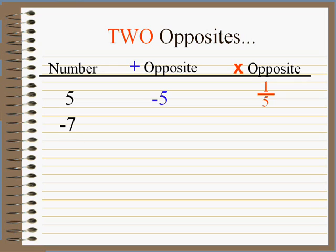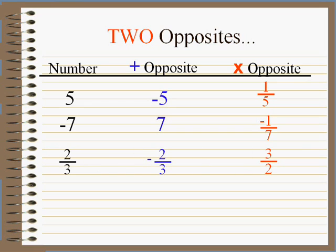Negative seven has an additive opposite, positive seven, but it also has a multiplicative opposite: one over negative seven. What about two-thirds? It has two opposites also. Negative two-thirds is its additive opposite, and its reciprocal — that's the word — is its multiplicative opposite: three over two.